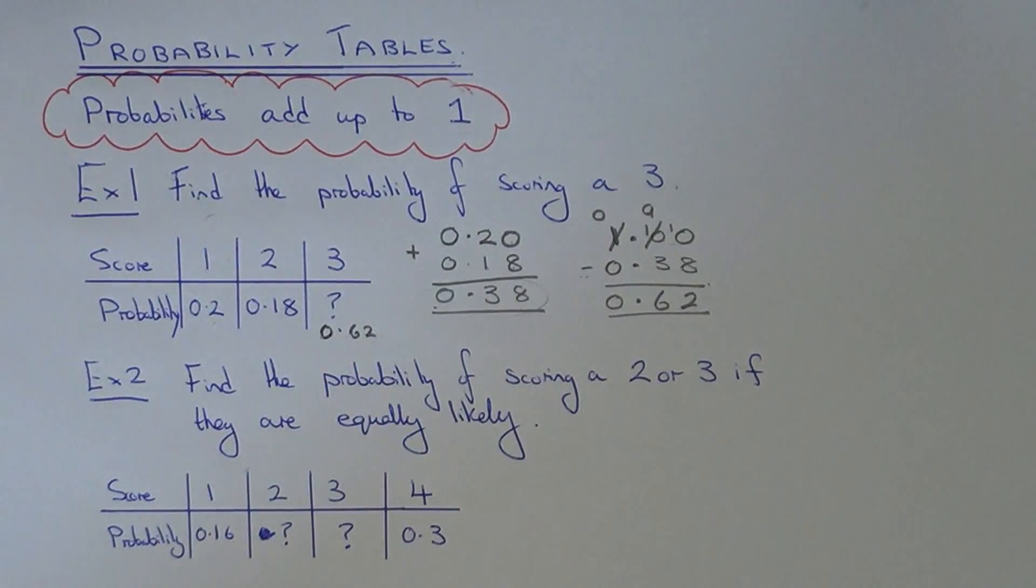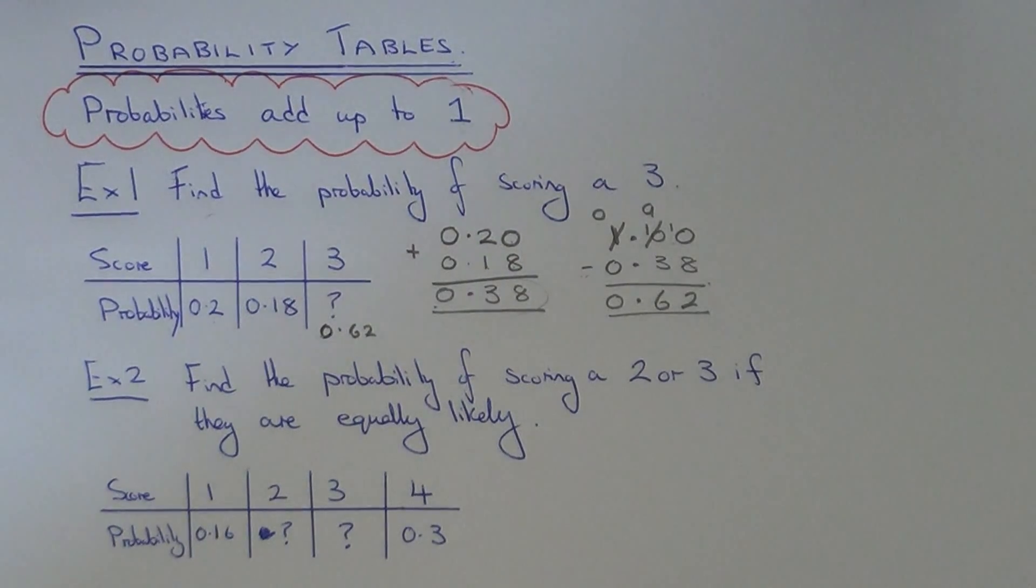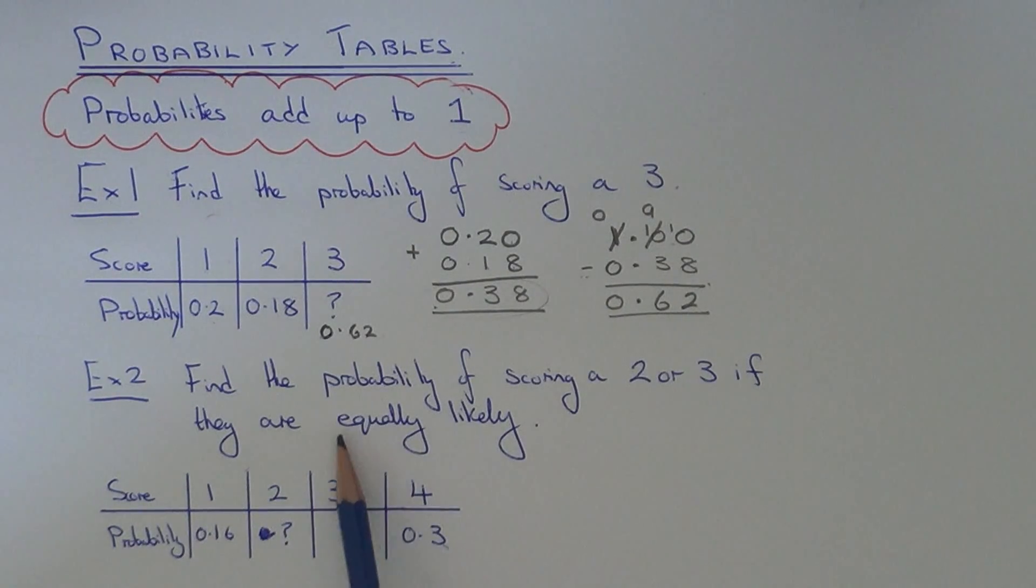So let's move on to example 2. So again, we've got another probability table, so again it could be relating to a spinner. This time we've got four numbers, and we've given the probability of scoring a 1 and the probability of scoring a 4, but we need to work out the probability of scoring a 2 and a 3. Now in the question we're told that the probability of scoring a 2 and a 3 are equally likely. This means that the probability of scoring a 2 and a 3 is the same. These two numbers here are equal to each other.